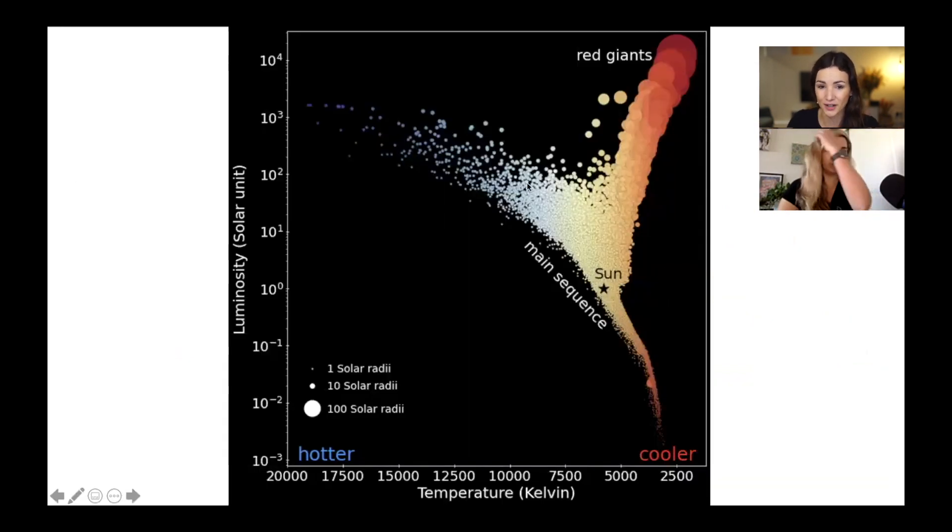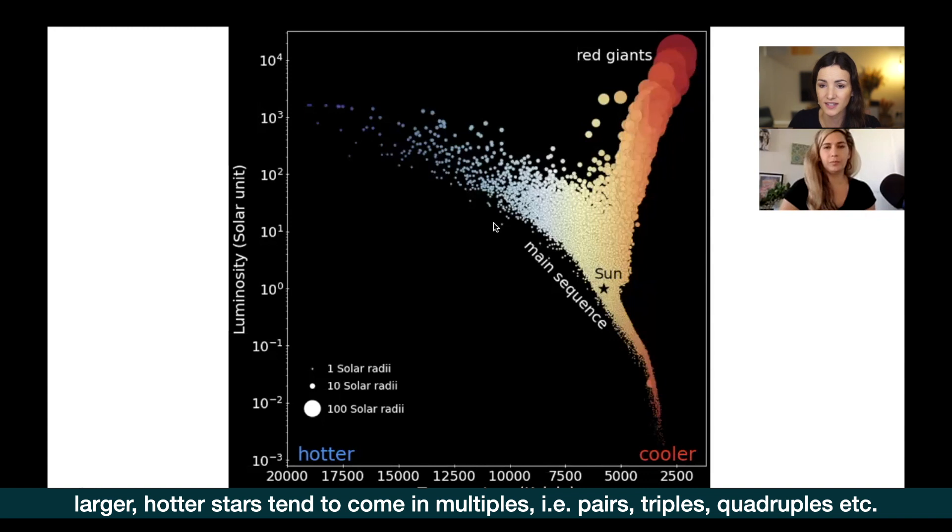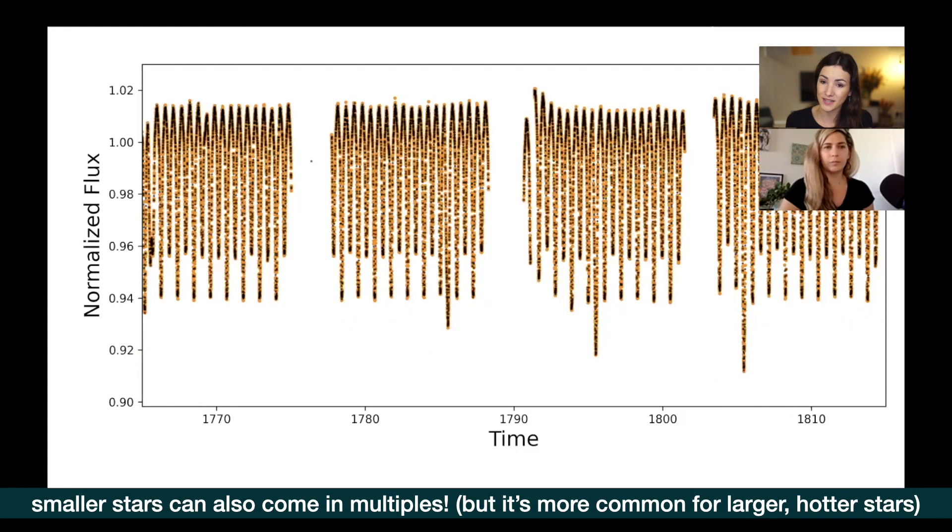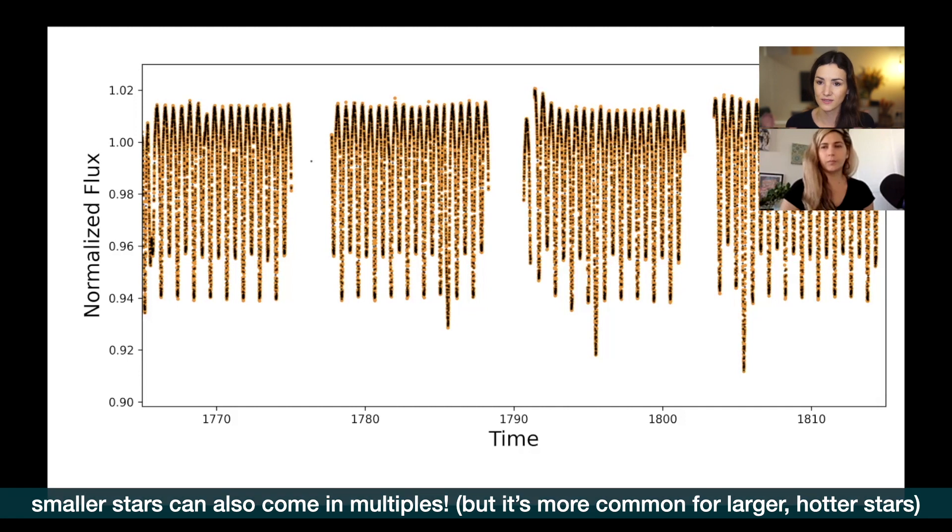Now, if we move up to the other end of this HR diagram, if we start looking at the much larger stars, larger stars tend to come in binaries or even higher order multiples. So triple system, quadruple systems, lots of stars moving around one another. It's a common property of larger stars. So an example of that would be this target here. We can see an eclipsing binary here with another signal. This actually happens to be a triple system. So three stars, three very large stars orbiting around one another in this case, very rapidly.